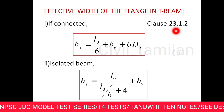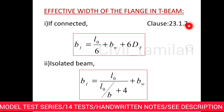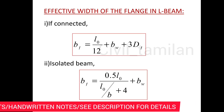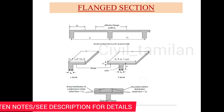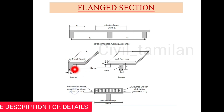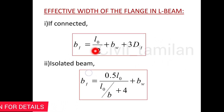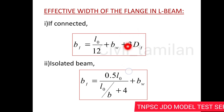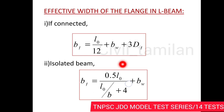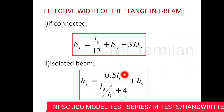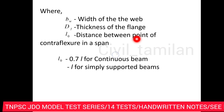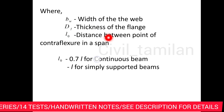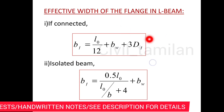Just note and memorize this. Next, the other part is the L-beam. The L-beam has one portion cut off the side. If connected, the width of the flange for L-beam is: for isolated beam, 0.5 × L0 divided by (L0/B + 4), plus Bw. Note the notation for the exam: Bw is the web width, Df is the thickness of the flange, and the flange is the top portion.